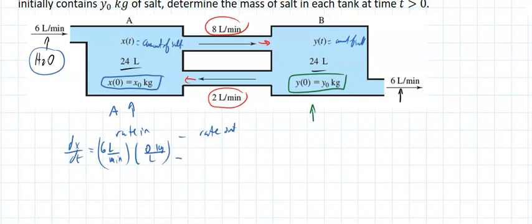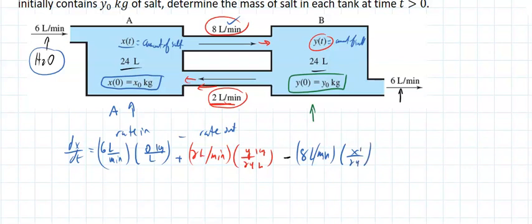Plus, we're getting 2 liters per minute coming out of tank B, and tank B would have a concentration of y divided by 24. Minus the rate out: 8 liters per minute at a concentration of x divided by 24. So dx/dt is plus y divided by 12 minus x divided by 3.